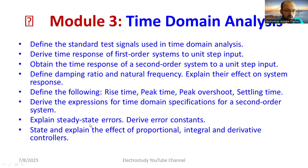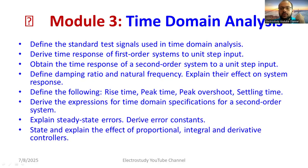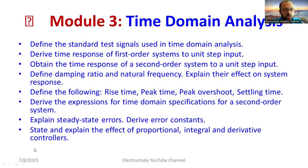Derive the expression for peak time and rise time; remember the remaining formulas. Understand steady-state error: it equals lim(s→0) s·E(s). Know the different error constants — Kp: lim(s→0) G(s)H(s); Kv: lim(s→0) s·G(s)H(s); Ka: lim(s→0) s²·G(s)H(s). State and explain the effect of proportional, integral, and derivative controllers.